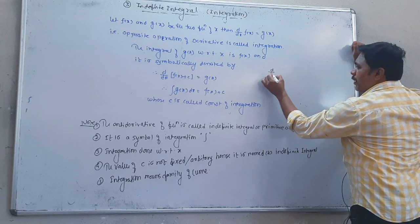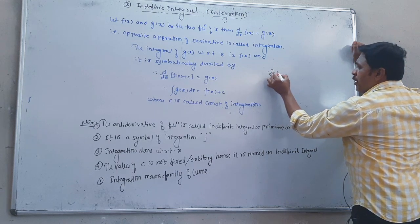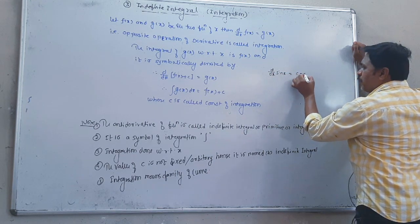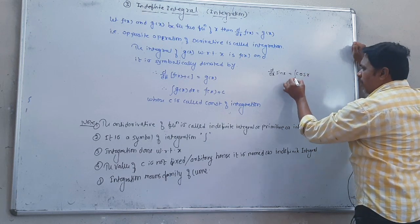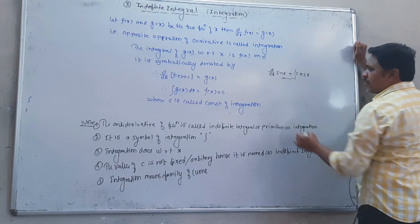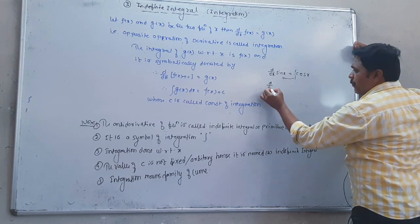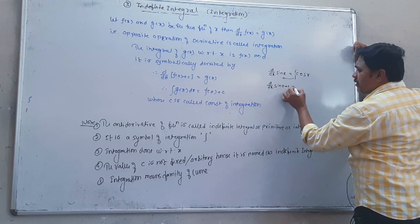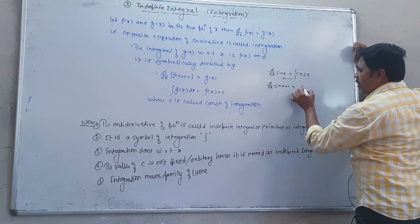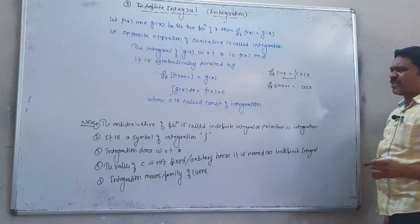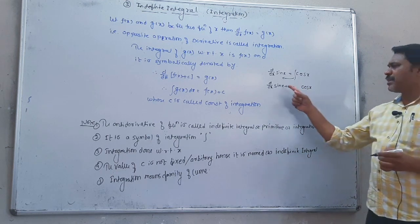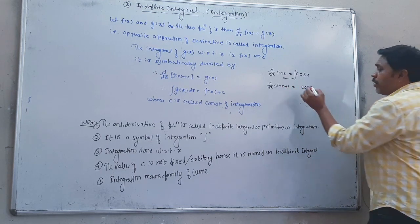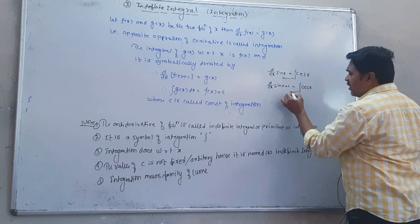That implies the integral of g of x dx equals y of x plus c, where c is called the constant of integration. For example, the derivative of sin x is cos x. So the integration gives back sine. The derivative of sin x plus 1 is also cos x, since the derivative of a constant is 0.